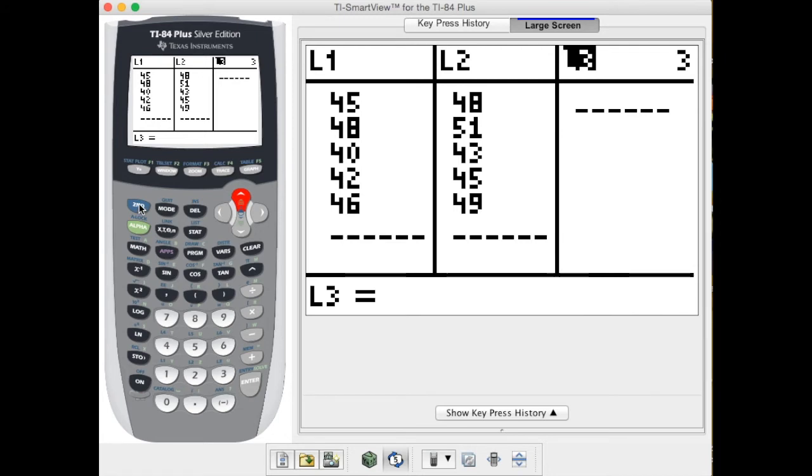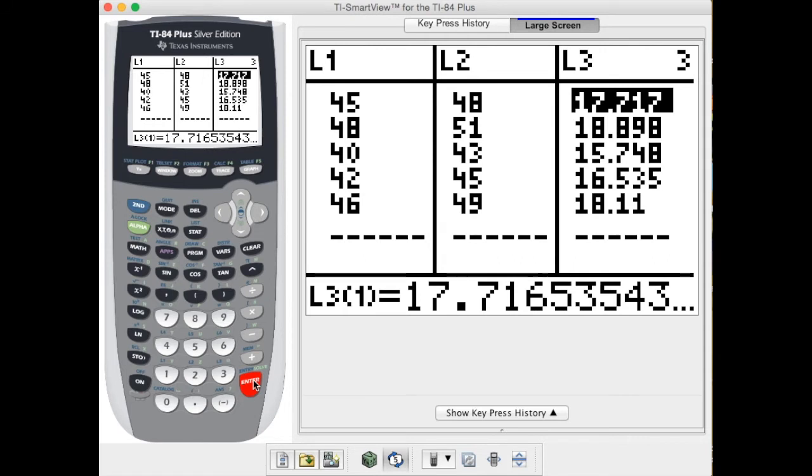I'm going to do the same thing I did in list two: second one and then divide by 2.54 and hit enter. It will automatically do that for me in every single cell and it's nice when you do it as a whole list because all of these values that you would have had to originally round now are the actual numbers.